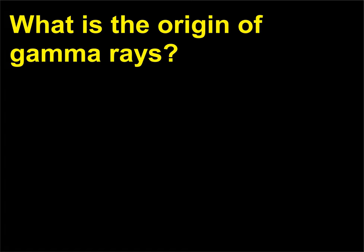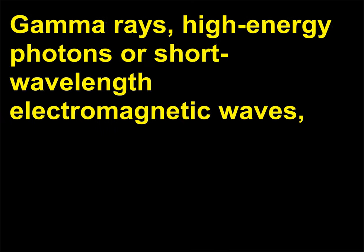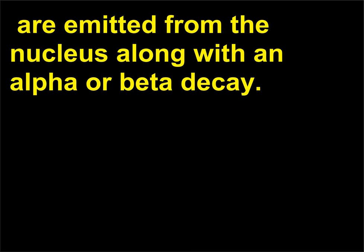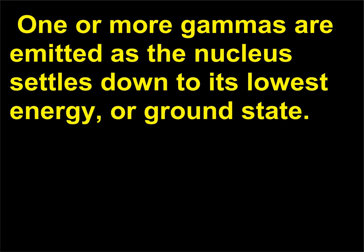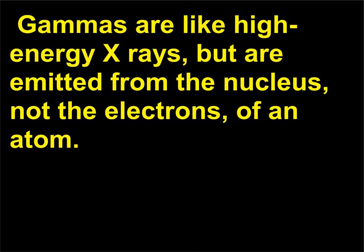What is the origin of gamma rays? Gamma rays are high-energy photons or short-wavelength electromagnetic waves emitted from the nucleus along with an alpha or beta decay. When an alpha or beta decay produces a daughter nucleus, that nucleus is often in an excited state. One or more gammas are emitted as the nucleus settles down to its lowest energy or ground state. Gammas are like high-energy X-rays but are emitted from the nucleus, not the electrons of an atom.